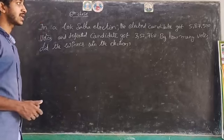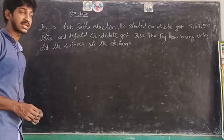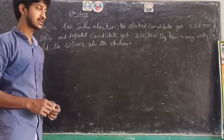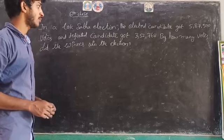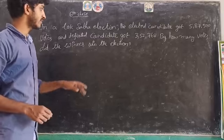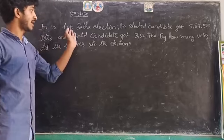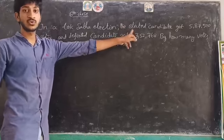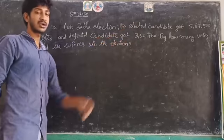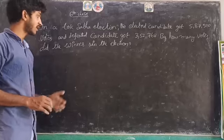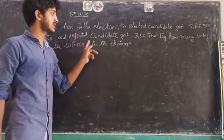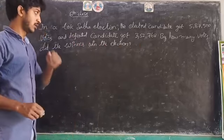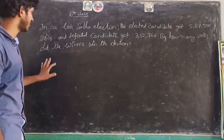In a Lok Sabha election, an elected candidate got 5,87,500 votes and a defeated candidate got 3,768 votes. By how many votes did the winner win the election? The elected candidate, meaning the one who won, got 5,88,500 votes, and the one who lost got 3,55,768 votes. By how many votes did the winner win the election?